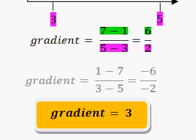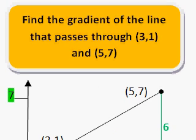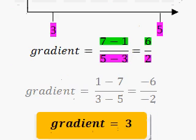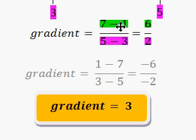Here's a quick summary. The question said, find the gradient, or the steepness. You find the steepness by doing the up distance divided by the across distance, or the difference in the y's divided by the difference in the x's, which we've got here. The difference in the y's divided by the difference in the x's, which is 6 divided by 2 in this case, equals 3. And it doesn't matter which order you do it.